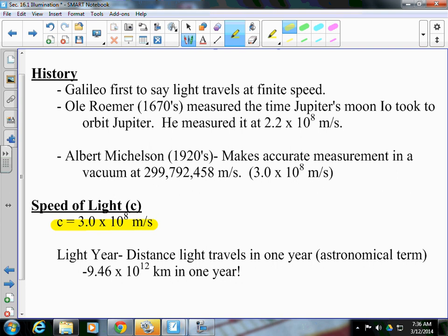So, 946 trillion kilometers light travels in one year. So, if you were traveling at the speed of light, you would travel 946 trillion kilometers in one year.